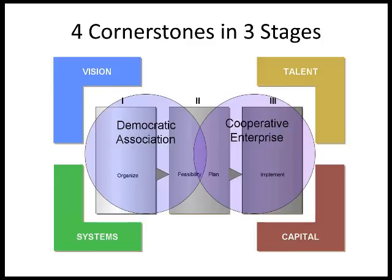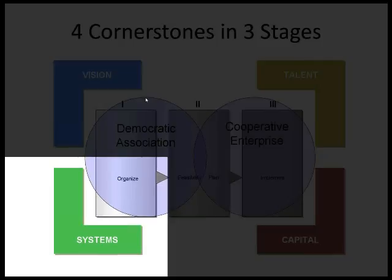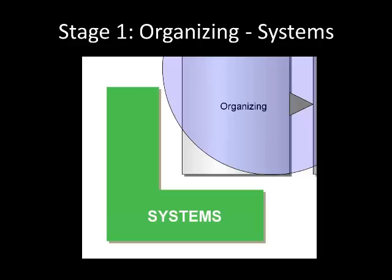Before we get there, I want to ground us in why we're talking about systems at all. The four cornerstones and three stages picture is a great framework for starting food co-ops. The three stages are: Stage 1, organize — focused on democratic association and developing new relationships. Then feasibility planning, and finally implementation, where we're setting up the business and hiring professional staff. Today we'll restrict ourselves to the systems most important during the organizing stage.